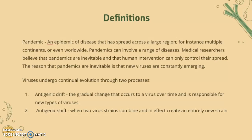This occurs through continual evolution through two processes: antigenic drift, which is the gradual change that occurs to a virus over time and is responsible for new types of viruses; and antigenic shift, which is when two virus strains combine and in effect create an entirely new strain. This can be seen with COVID going on currently.